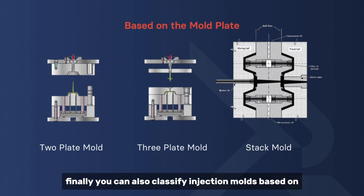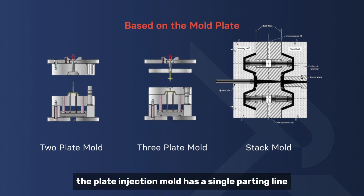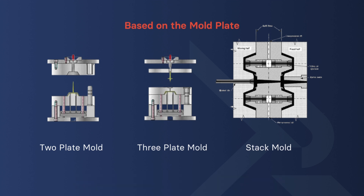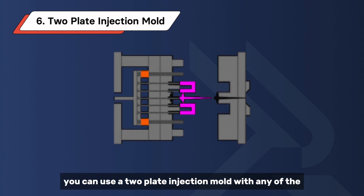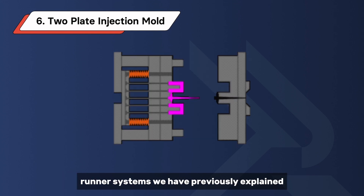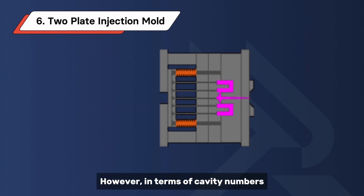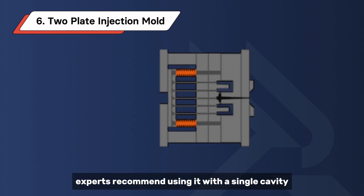Finally, you can also classify injection molds based on the mold plate. It can be two plates, three plates, or stack injection mold. The two-plate injection mold has a single parting line, located at the point where the mold separates. It is suitable for parts with simple designs. You can use a two-plate injection mold with any of the runner systems previously explained. However, in terms of cavity numbers, experts recommend using it with a single cavity.